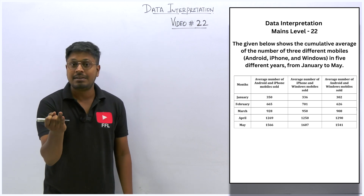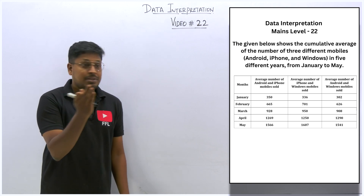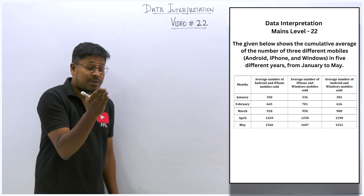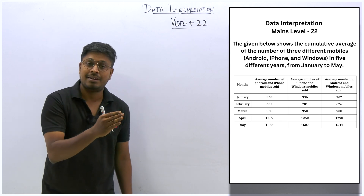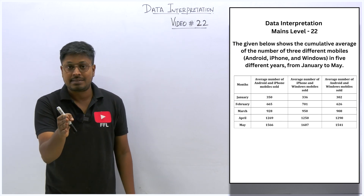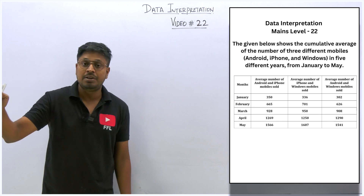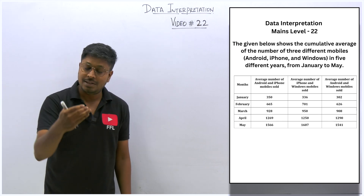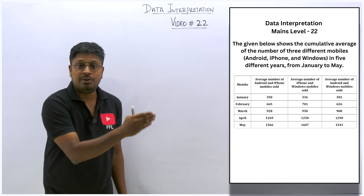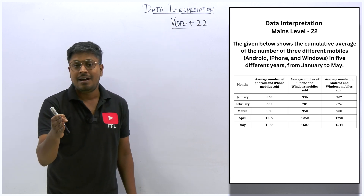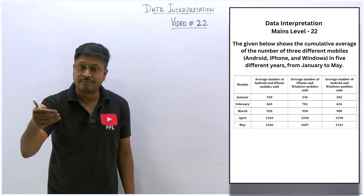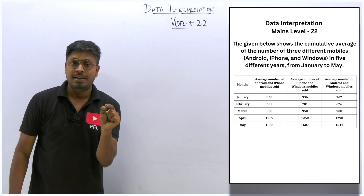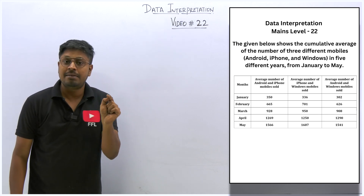You can see these kinds of DI on RRB Clerk mains, IBPS Clerk mains, and LIC mains exams. What we need to do is frame equations: x+y, y+z, z+x, and x+y+z. We frame equation one, then similarly frame three different equations, solve all three, and get the values of x, y, and z. Then we frame a new tabular column, and only after that do we solve the five questions based on this DI.